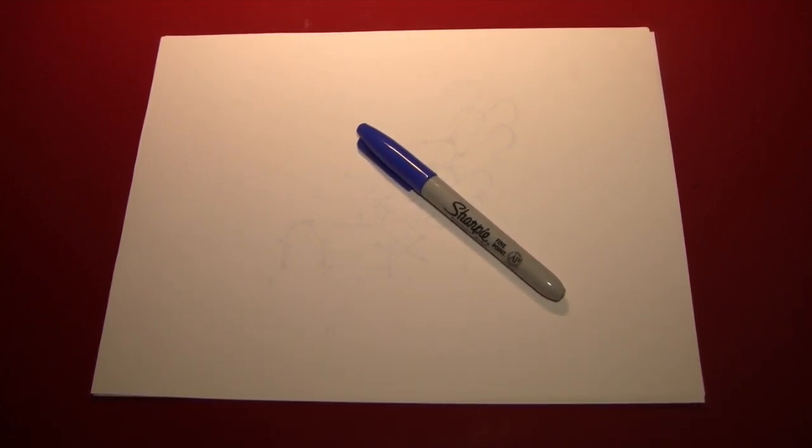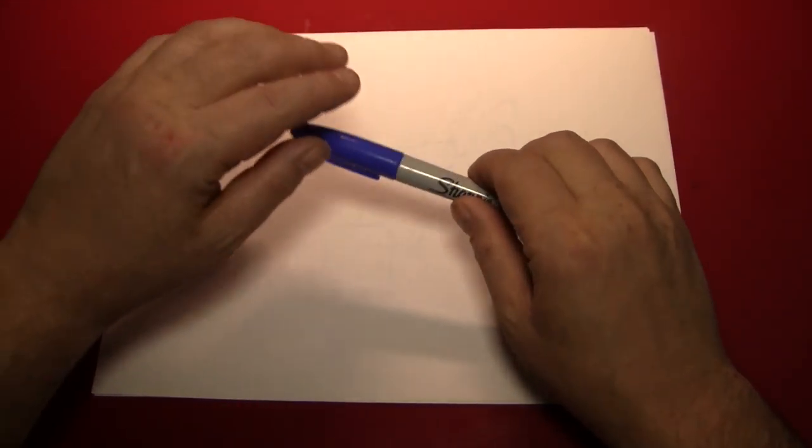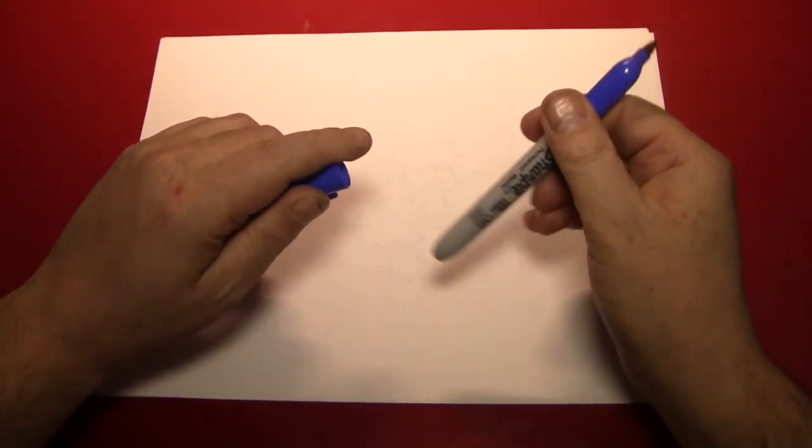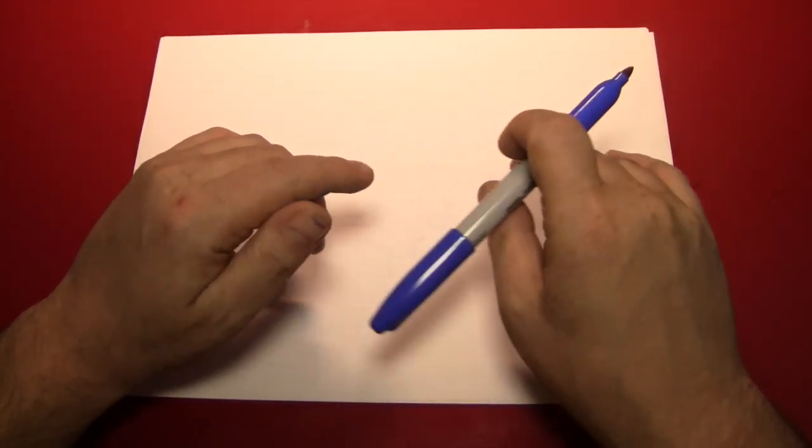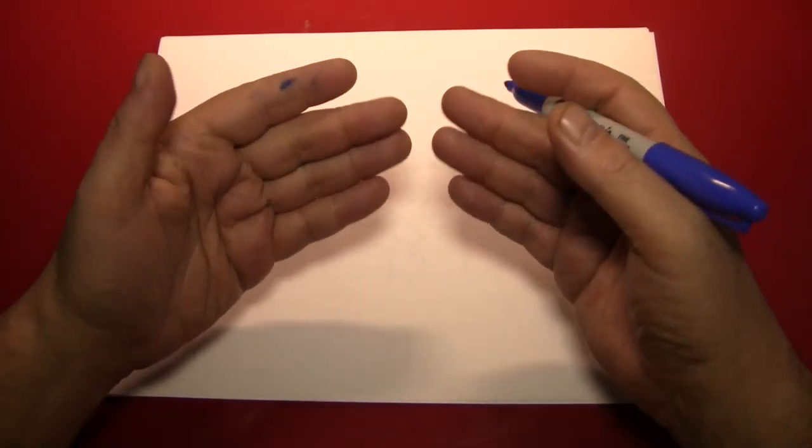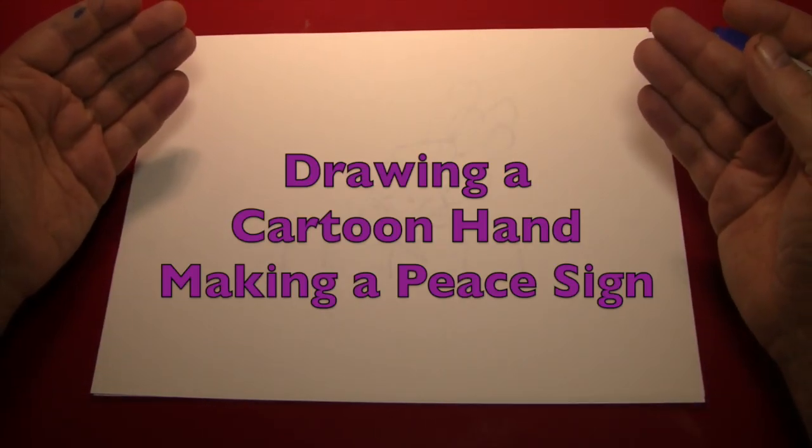Hello again everybody. It's the Reverend Jay Goldstein and welcome to another episode of Doodling with Reverend Jay. In today's episode we'll be drawing a cartoon hand making a peace sign.